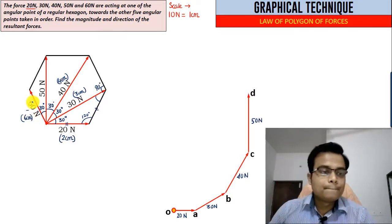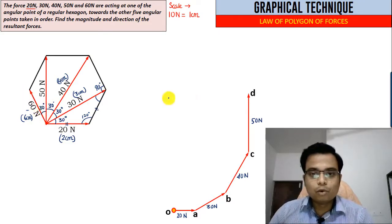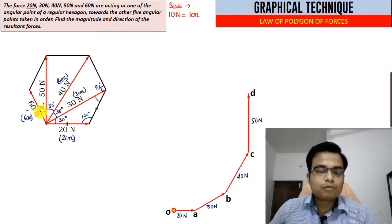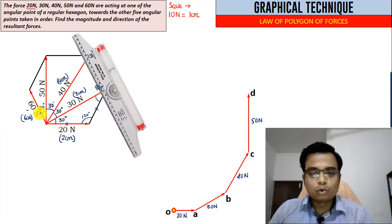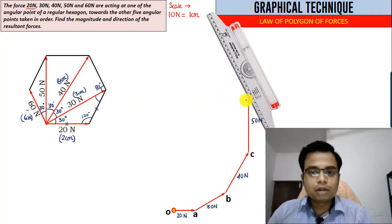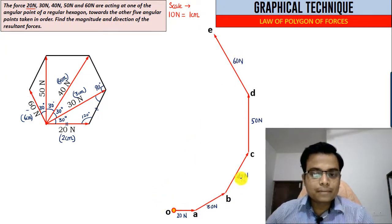For that you've got to make use of a roller scale this way. Roll it until you reach point D, then draw a line. This is 6 centimeters representing a force of 60 Newtons. So this is the order in which I have put up the forces.